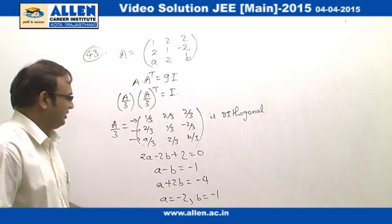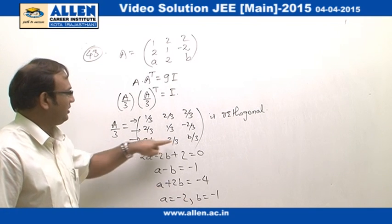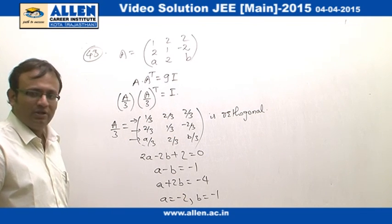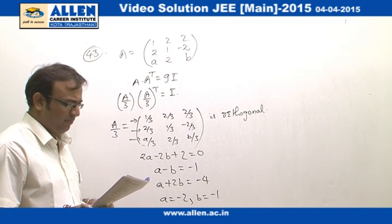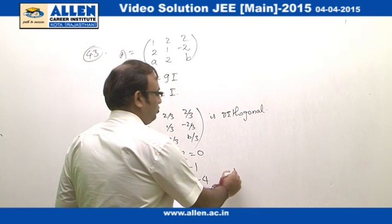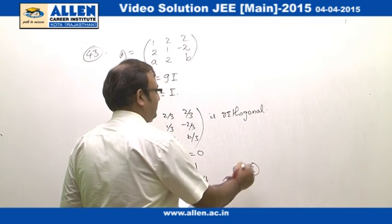And we also see that for these two values, this vector also becomes a unit vector. Therefore, A equal to minus 2, B equal to minus 1 is the correct ordered pair. And according to option, option number 2 is going to be the correct answer.